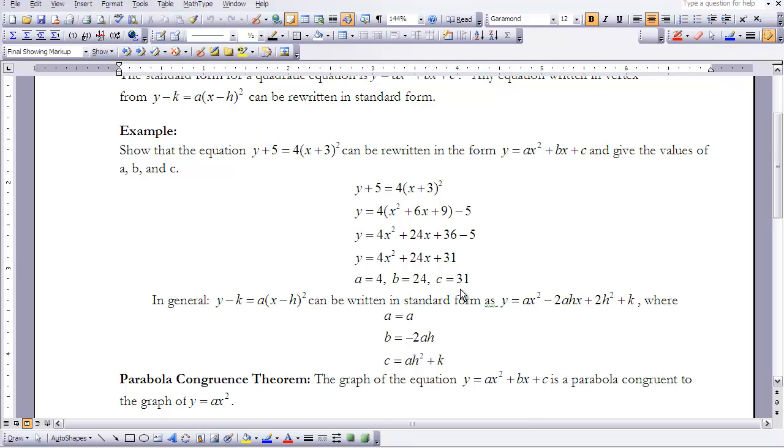Now in general, if I were to expand or take this vertex form into standard form, it would look a little bit more complicated because it would deal with all of the variables. So it would have the form of y equals ax squared minus 2ahx plus ah squared plus k. Our a is the same as a. Our b is minus 2ah, and c is ah squared plus k.